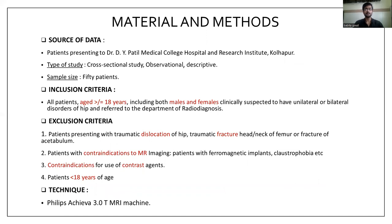The source of data was patients presenting to Dr. Revipatil Medical College Hospital, Kollapur. The type of study was a cross-sectional observational study with a sample size of 50 patients. In the inclusion criteria, all patients were aged greater than or equal to 18, both male and female, suspected to have unilateral or bilateral disorders of hip, and referred to the department of radio diagnosis. In exclusion criteria, patients presenting with dislocation of hip, fracture of head and neck of femur or acetabulum, contraindications to MRI such as ferromagnetic implants or claustrophobia, contraindications to contrast agents, and patients less than 18 years of age were excluded.